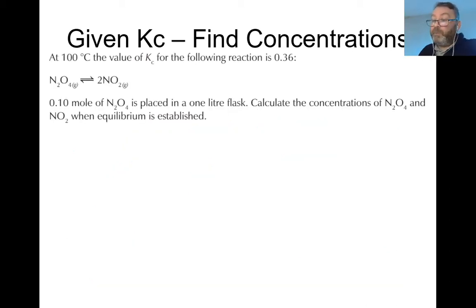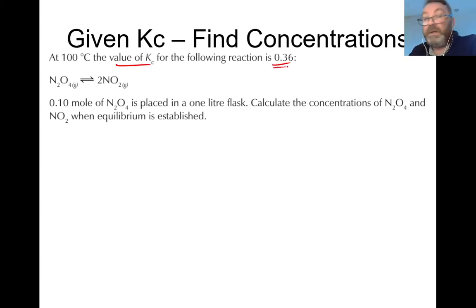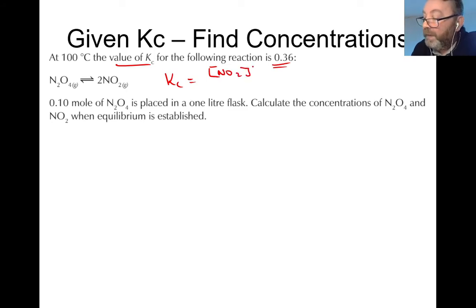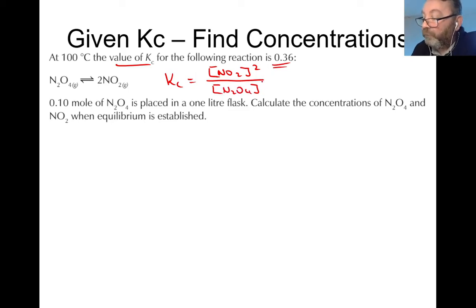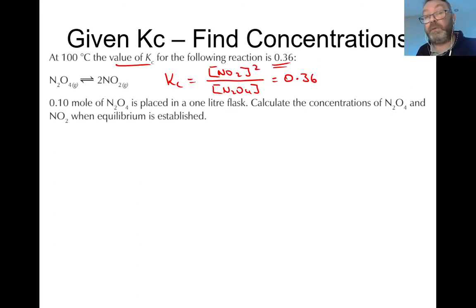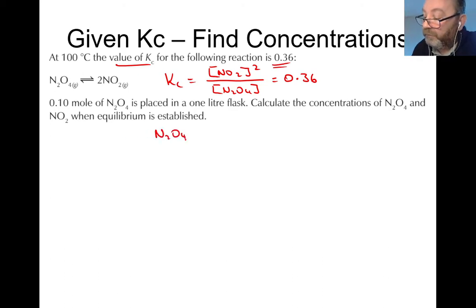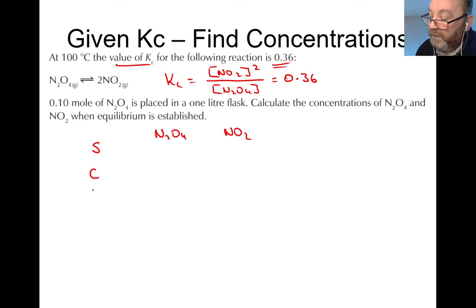Let's take a second example. At 100°C, the value of Kc is 0.36. Straight away, write down the Kc expression: Kc equals the concentration of NO₂ raised to the power of 2, over the concentration of N₂O₄ raised to the power of 1, and set it equal to 0.36. Set up the table with the two species — dinitrogen tetroxide and nitrogen dioxide — with rows for starting quantity, change, and equilibrium.